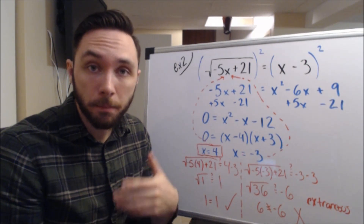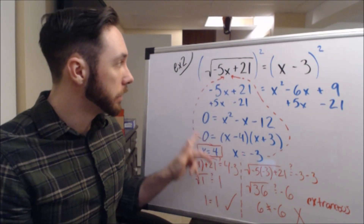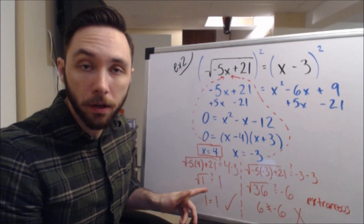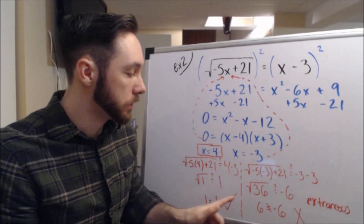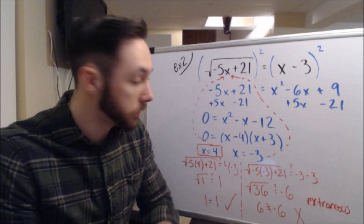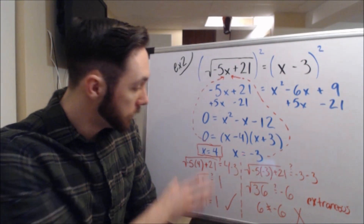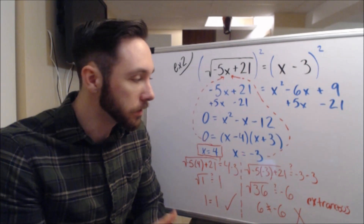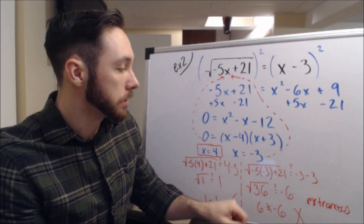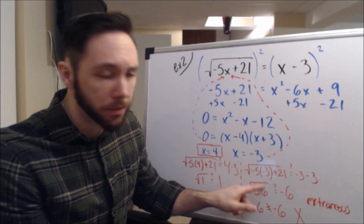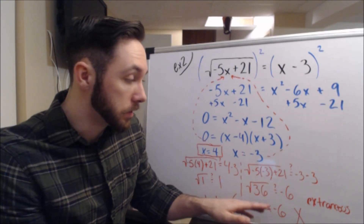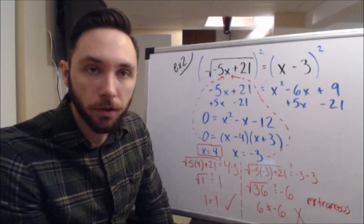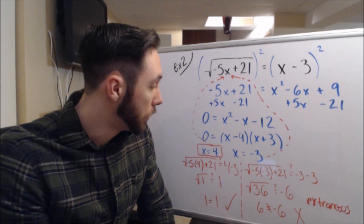Now I have two solutions — I have to test both. When I plug in 4, I have negative 5 times 4 plus 21 underneath the radical, which comes out to 1. The square root of 1 is just 1. On the right side, 4 minus 3 is also 1. 1 equals 1 — that works. I went ahead and boxed that 4. 4 is a viable solution; it is not extraneous. Now if I do the same with negative 3, inside the radical I get 36. Is the square root of 36 equal to negative 6? No — the square root of 36 is 6. 6 is not equal to negative 6. This negative 3 is an extraneous solution, so I crossed that off. 4 is the only workable solution.